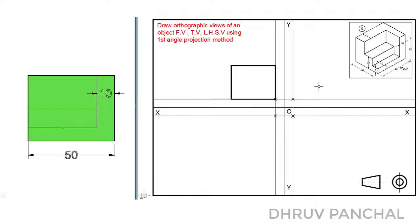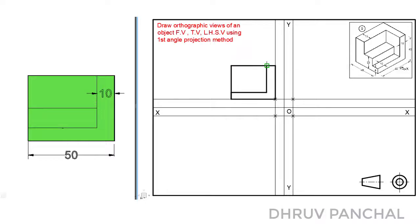From this point, mark a point 30 millimeters along, then mark a point 8 millimeters above. From that point, draw a horizontal line of 40 millimeters and a vertical line of 32 millimeters. Then mark a point 20 millimeters above and draw a horizontal line of 40 millimeters. Our front view is now completed.